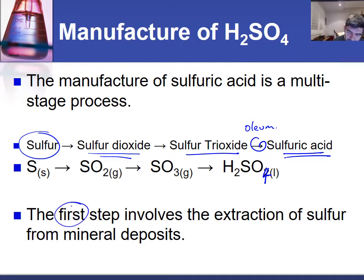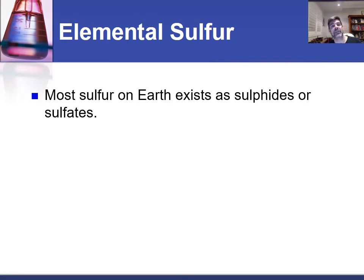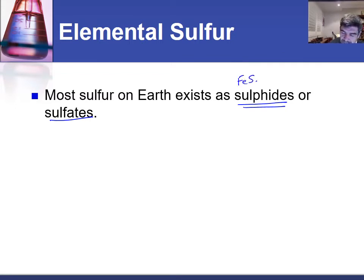The first step involves the extraction of sulfur from mineral deposits. We've talked about the fact that sulfur collects around the mouth of volcanoes, but it can also form deposits within the Earth's crust. Most of the sulfur found within the crust exists in a compound — either as a sulfide or as a sulfate — such as iron sulfide or copper sulfate. To get the sulfur out, you need to find those compounds and break them down to release the sulfur.